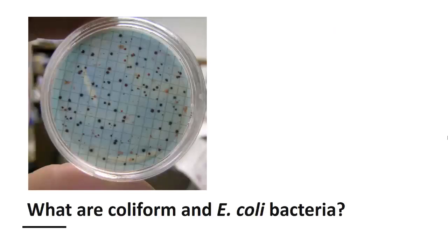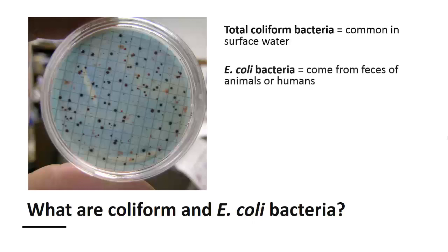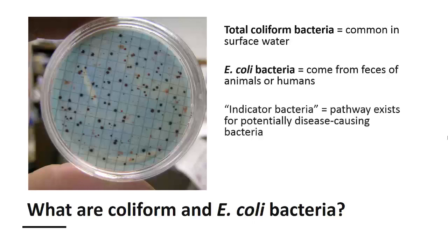Coliform bacteria and E. coli bacteria are the two most common water tests done on wells and springs to determine their microbiological safety for drinking. Total coliform bacteria are a large group of bacteria that are common in surface water, while E. coli bacteria come from the feces of animals or humans. These two groups of bacteria are called indicator organisms because they indicate that a potential pathway exists for disease-causing bacteria to enter the water supply.